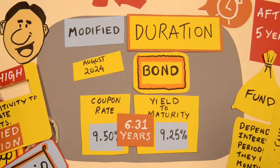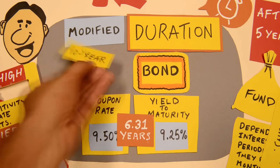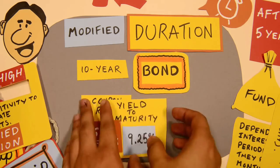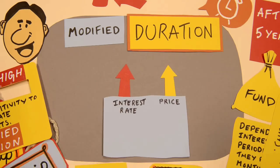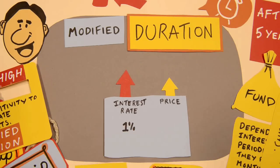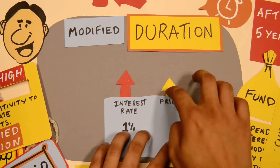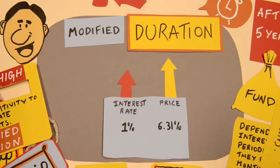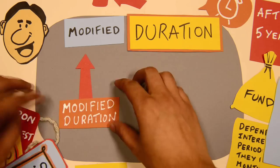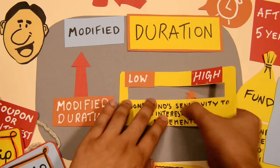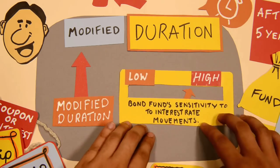Note that the bond's maturity is 10 years, but its modified duration is 6.31 years. This means that if interest rates move up or down by 1%, its price will move down or up — opposite reaction — by 6.31%. Higher the modified duration, more sensitive is your bond fund to interest rate movements.